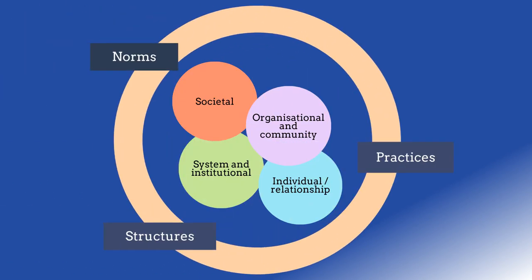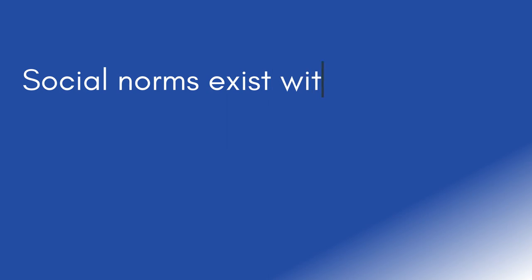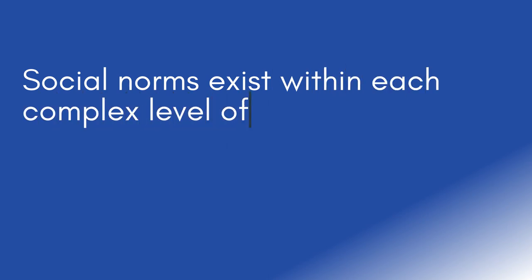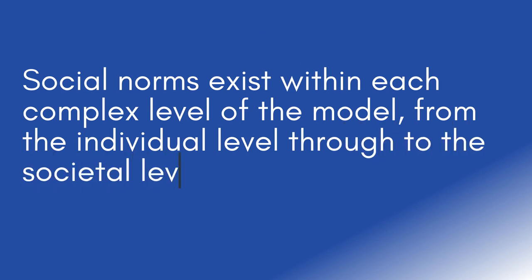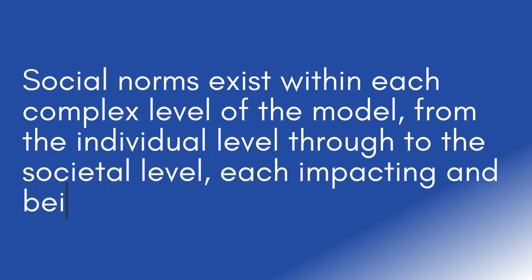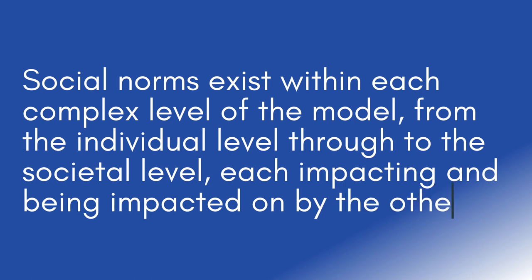Here we can see how all the levels of the socio-ecological model overlap with one another. Social norms exist within each complex level of the model, from the individual level through to the societal level, each impacting and being impacted on by the others.